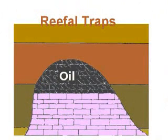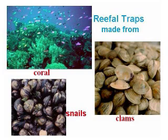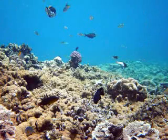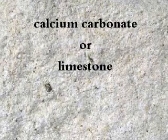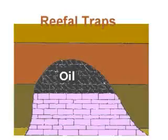Reefal traps are formed where millions of shelled animals died — like clams, snails, and coral — and where they got buried on the bottom of the ocean. These shells, made of calcium, are buried and crushed into calcium carbonate or limestone rocks, our standard reservoir rock here in the UAE. Reefal traps are excellent places to find oil.